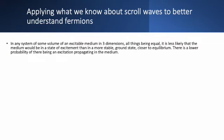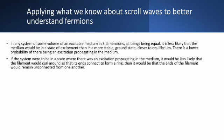In any system of some volume in three dimensions of an excitable medium, all things being equal, it's less likely that the medium would be in a state of excitement than in a more stable ground state — a state closer to equilibrium. There's a lower probability of the medium being in a state of oscillation or excitement than there is of the medium being in a state of equilibrium. Even if we were to grant that the system is in a state where there is an excitation propagating in the medium, it would be less likely that the filament of that excitation would curl around so that its ends connect to form a ring.